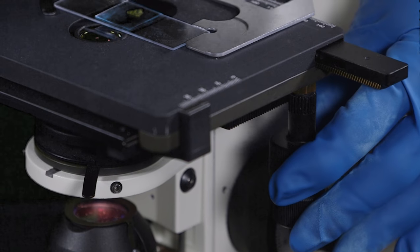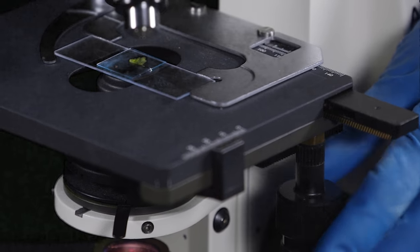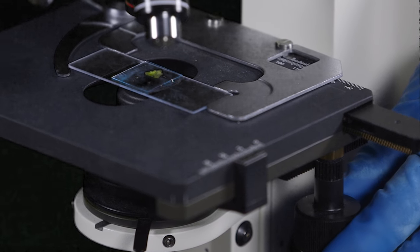Use the stage adjustment knobs to move your specimen over the condenser so that it's in the light and centered.